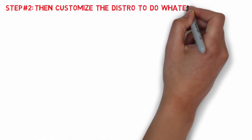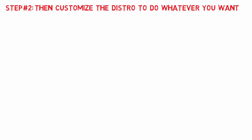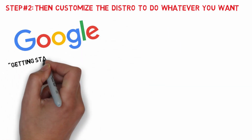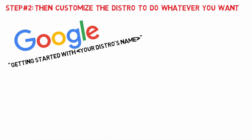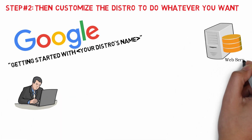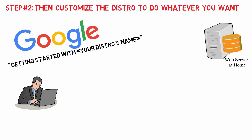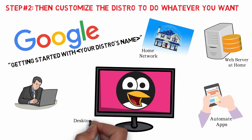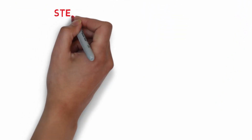Step number two: customize the distro to do whatever you want. Now that you have chosen a distro, the next step is to customize it to behave just the way you need it. Just Google 'getting started with' your distro's name and you will find plenty of articles to help you customize it. You can try out several fun projects, like setting up your own web server at home, sharing files on your home network, automating apps to run at specific times, or changing the desktop environment.